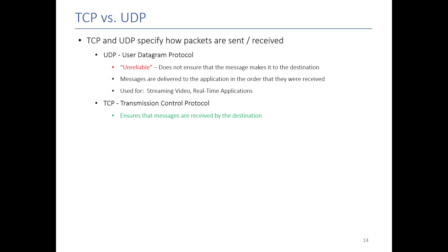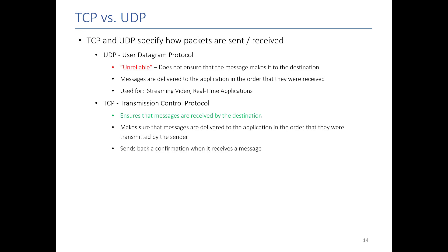TCP stands for Transmission Control Protocol — this is our more reliable one. It's like going to the post office and requesting delivery confirmation. TCP makes sure that messages are delivered in the correct order and will send back a confirmation to the computer if the message actually gets there. It will even notify the sender if the message doesn't get there so the sender can resend it. With UDP, you don't know if the message will ever get there. With TCP, the protocol is designed to make sure the message gets there exactly the way you intended. TCP is used for things like web pages and files — stuff where you need all the pieces for it to make sense.